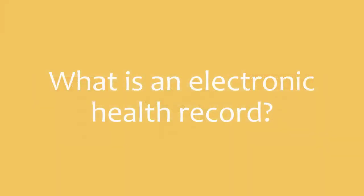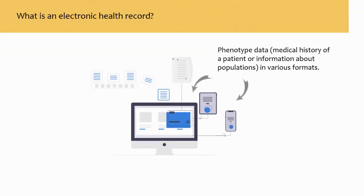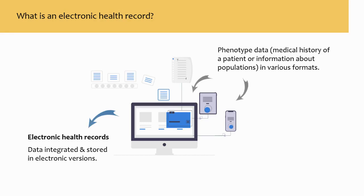What is an electronic health record? Electronic health records can be defined as electronic versions of the medical history of a patient, or collections of electronic health information about populations. However, even electronic health records use different data formats and the names of the phenotype attributes tend to vary.